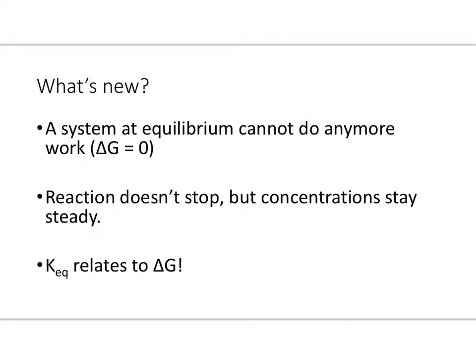That's because then the system can't do work anymore. All of the concentrations stay steady. So remember, this means that the reaction doesn't stop, it just means that the concentrations stay the same as the reaction kind of proceeds. So what that means is this: there's a relationship between our equilibrium constant and delta G.